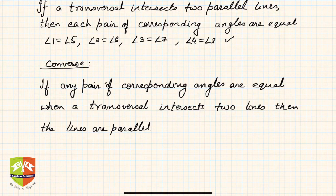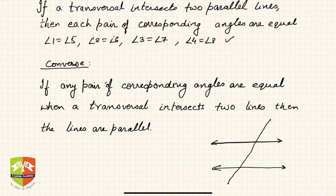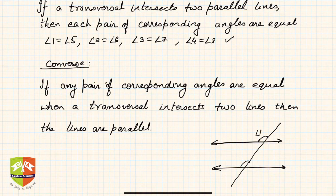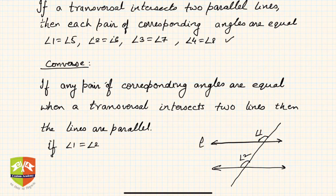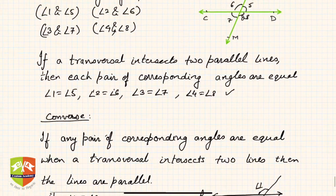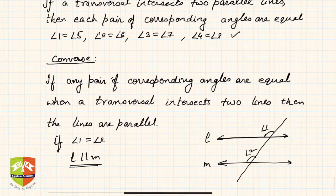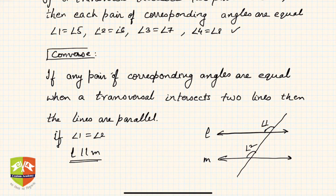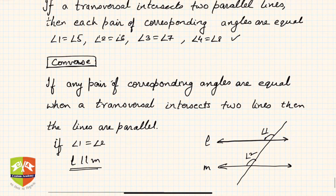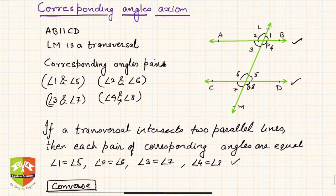For example, if two lines are given and you don't know whether they're parallel, you draw a transversal and figure out that angle one equals angle two. If they're equal, then line L is parallel to line M. So in the first axiom, if lines are parallel then corresponding angles are equal; in the second (the converse), if corresponding angles are equal then lines are parallel. Both are axioms, and we'll use them to prove theorems in subsequent sessions.